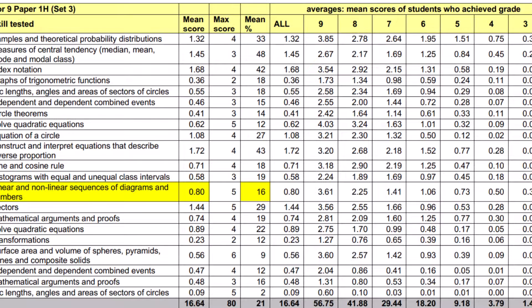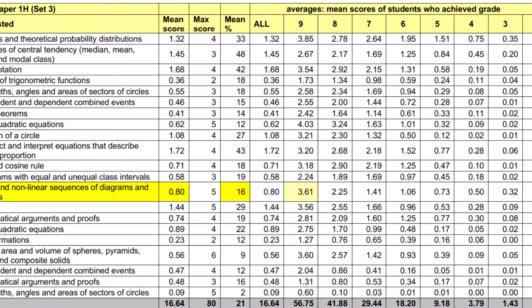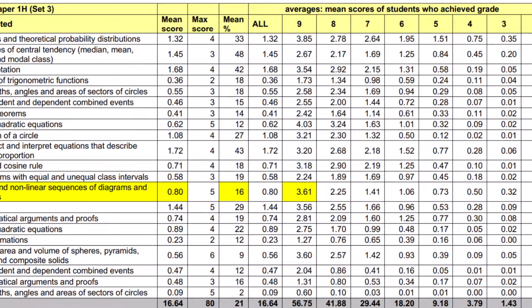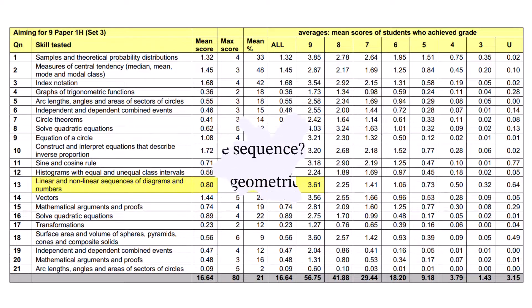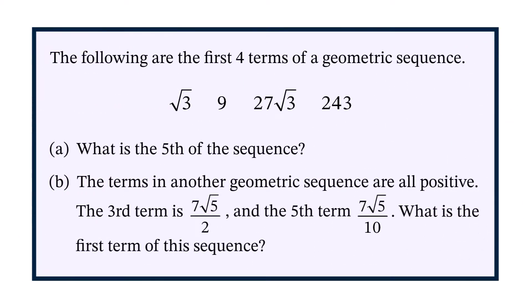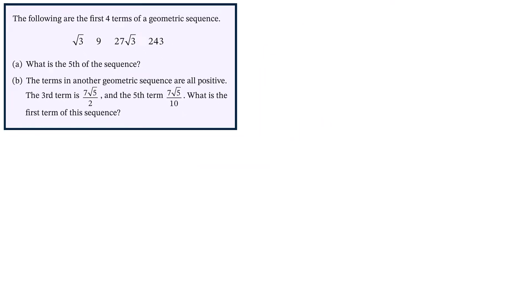Those students who achieved a grade 9 scored on average 3.61 marks out of a possible 5, so this was a challenging question for all students. Let's get back to the question and go through it one step at a time. A geometric sequence is one where each successive term is found by multiplying the previous term by a fixed number called the common ratio.